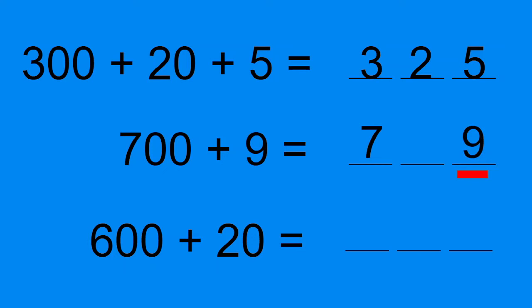I don't think that we can just skip a place, can we? 700 plus 9 doesn't equal 79. How many groups of 10 did we have? Zero.